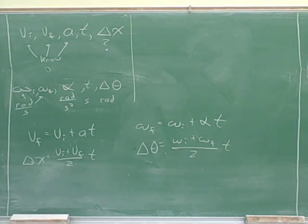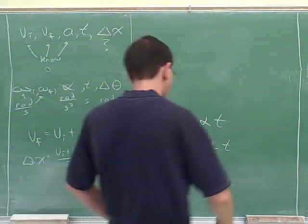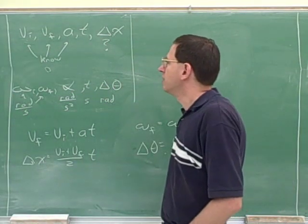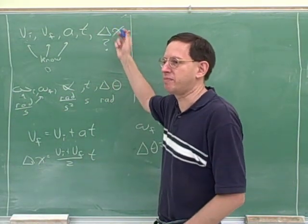On the handout, I put the x-component versions of those, but it should be easy to figure out what the y-component versions would be. That is the systematic method for doing kinematics.